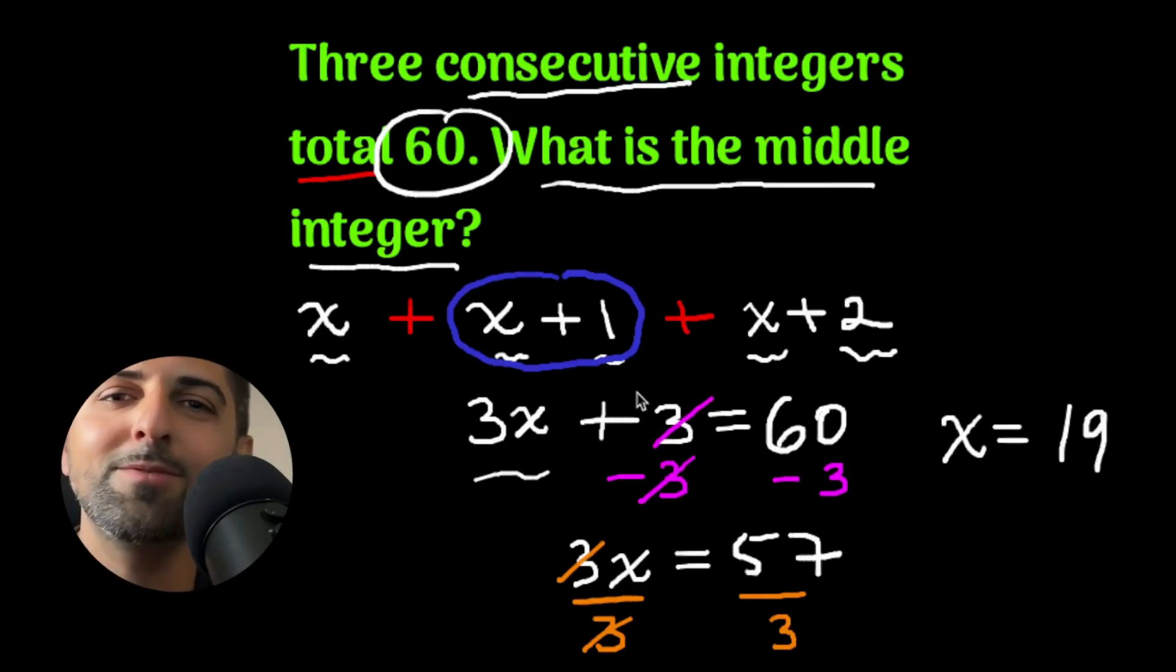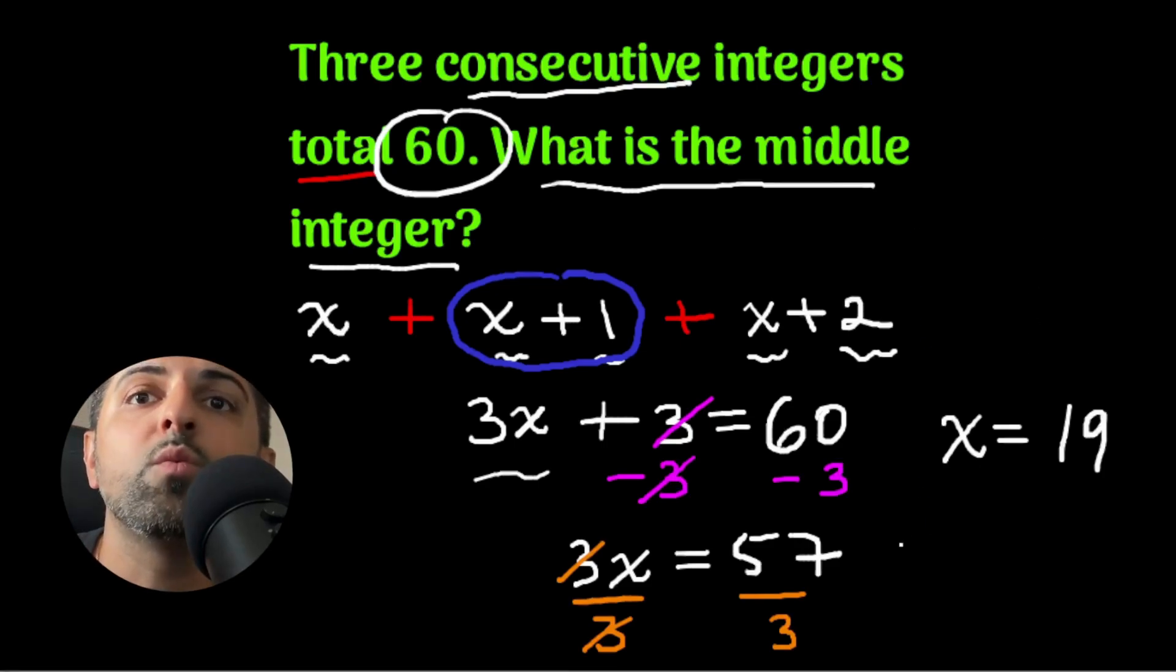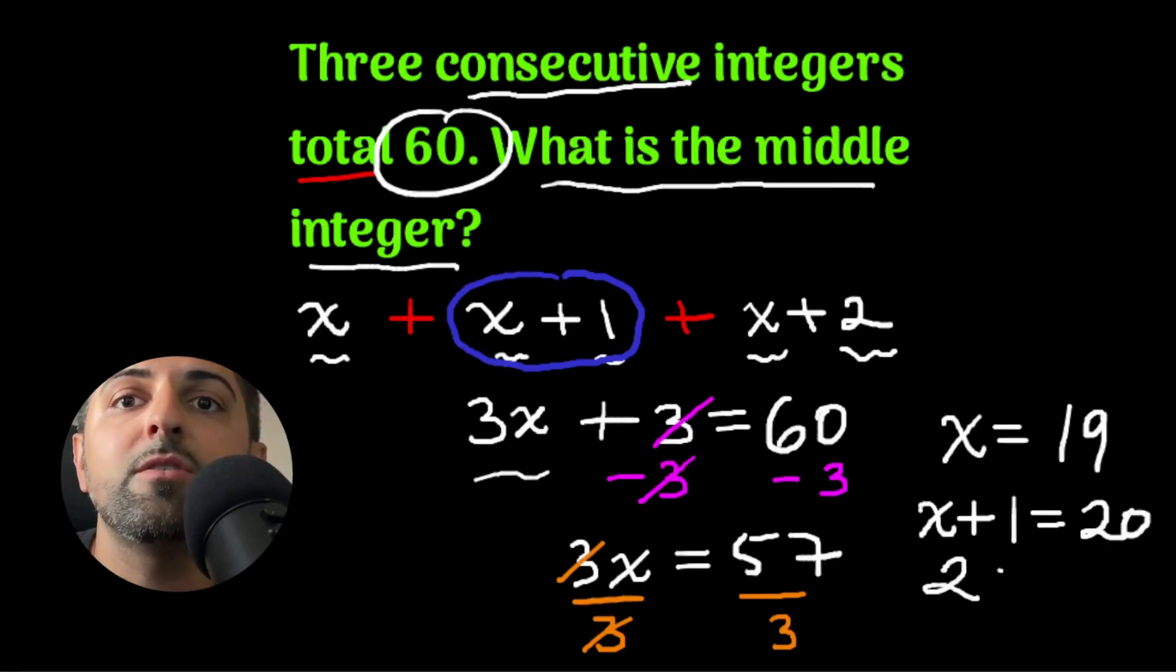So to get my final answer, all I have to do is take that number 19 and just add 1 to it. What is 1 higher than 19? The answer is 20. So my final answer for the middle number is 20.